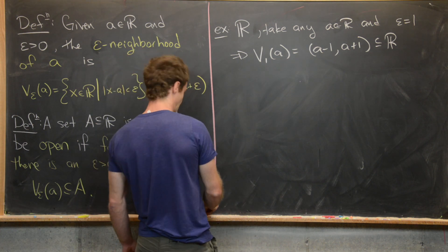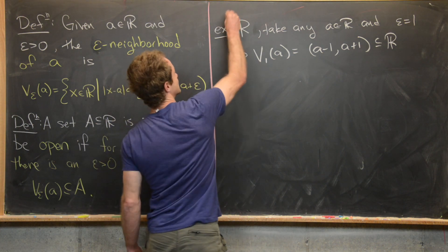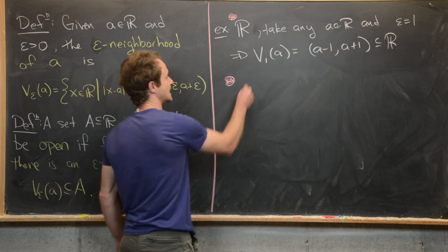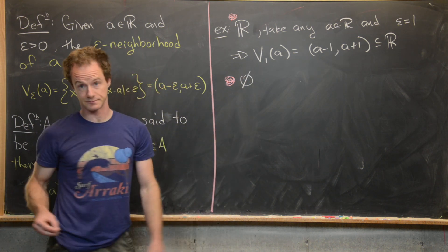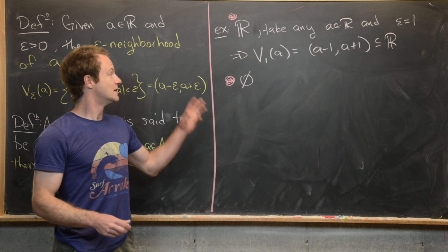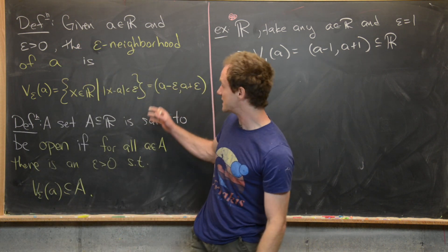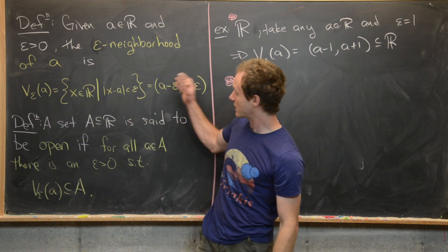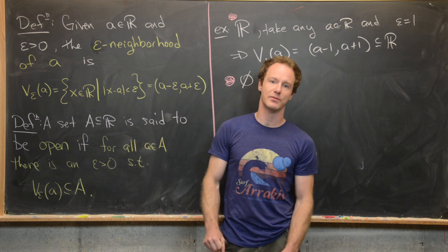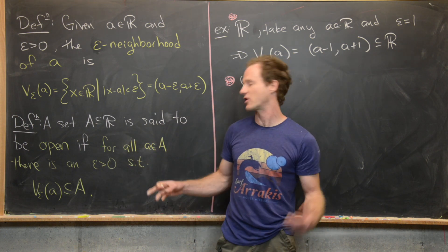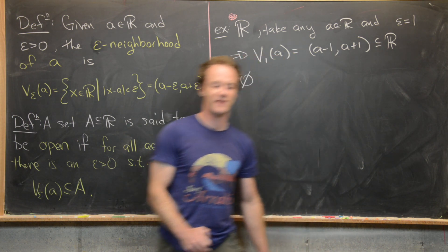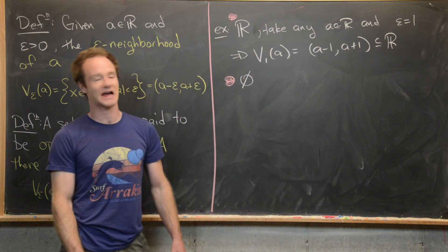Another classic example is the complement of the real numbers — in other words, the empty set. The empty set is most definitely open because every a inside the empty set has this property. It's just that there are no a's inside the empty set, so this condition is vacuously satisfied.